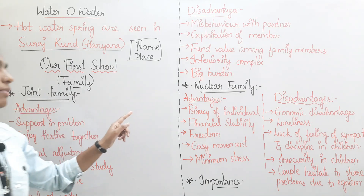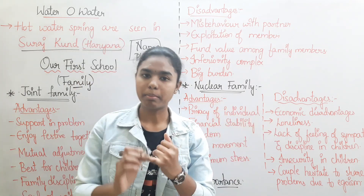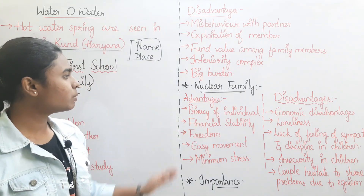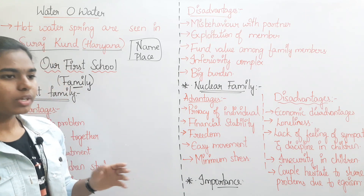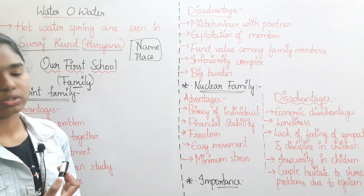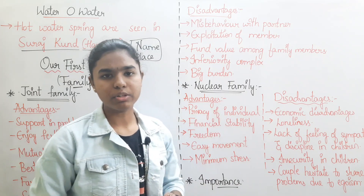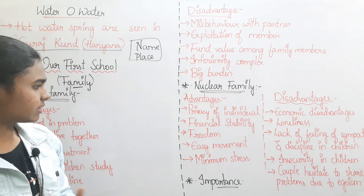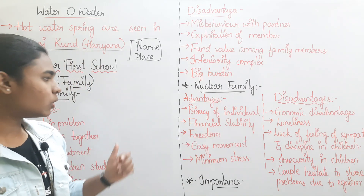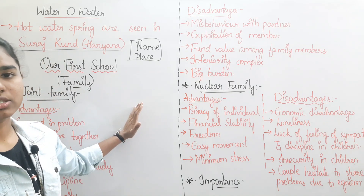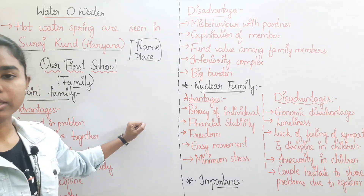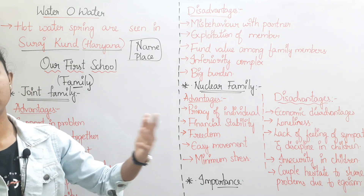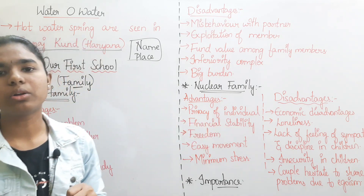Next, if you have a nuclear family, you will have only a mother, father and children — married or unmarried couple with kids. If you have 4 members in a family, one advantage is privacy of the individual and the family. Next advantage is financial stability — in a nuclear family, you can save money and manage your own land, gold and other assets.